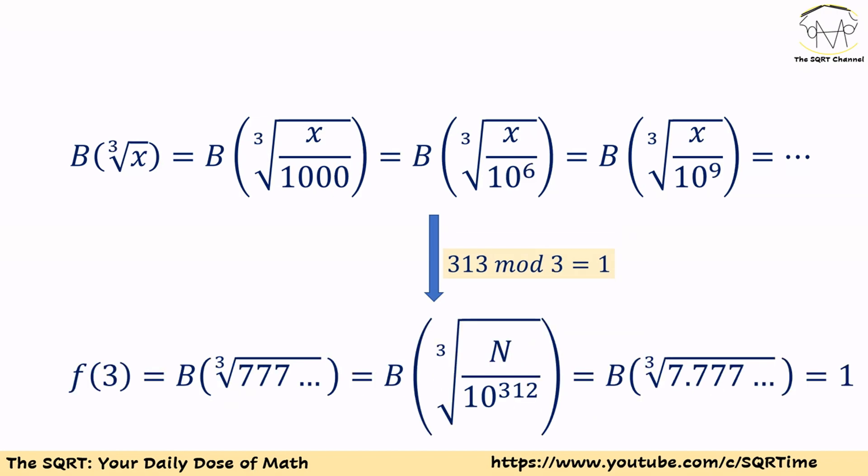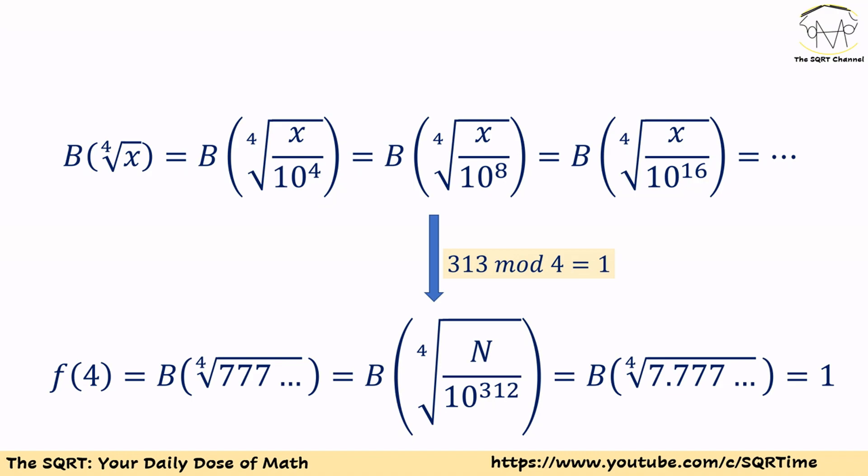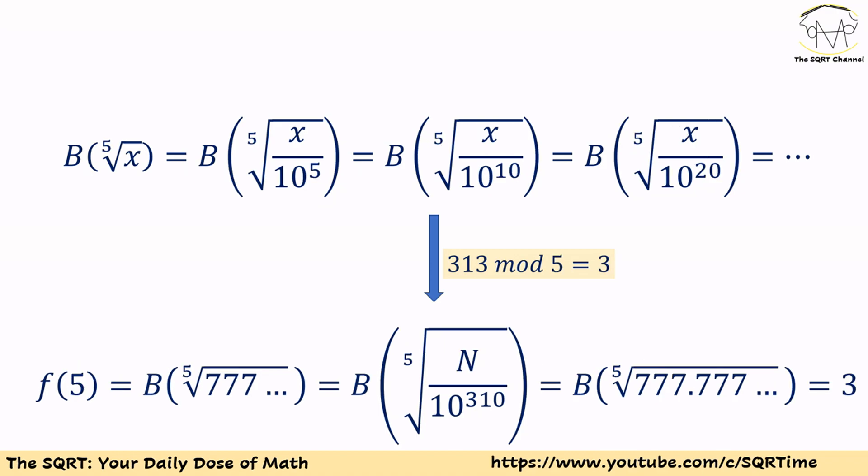Now let's talk about f(3). f(3) is the leading digit of the cube root of N. Since 313 mod 3 equals 1, the leading digit of the cube root of N equals the leading digit of the cube root of N over 10^312, which gives leading digit 1. For f(4), 313 mod 4 is also 1, so the leading digit is equal to the fourth root of N over 10^312, which is also 1.